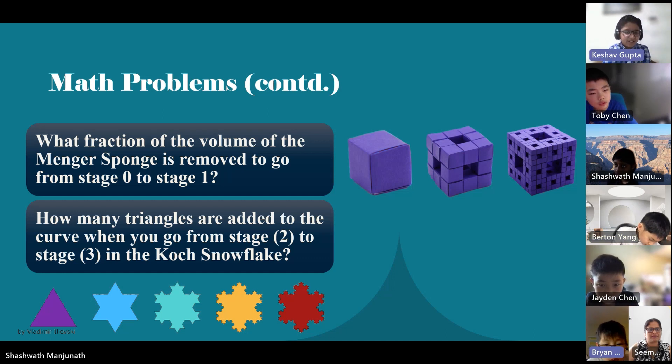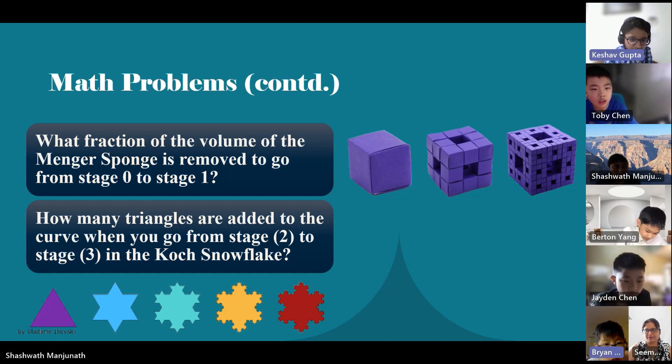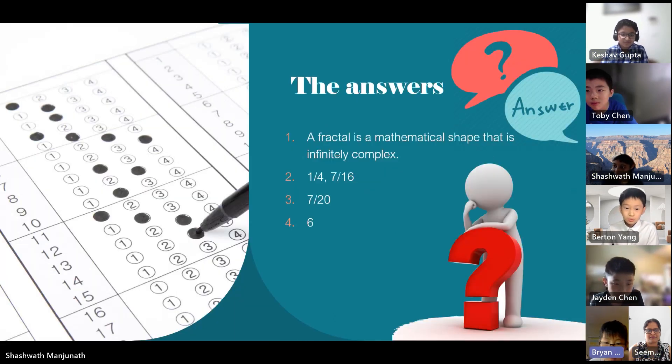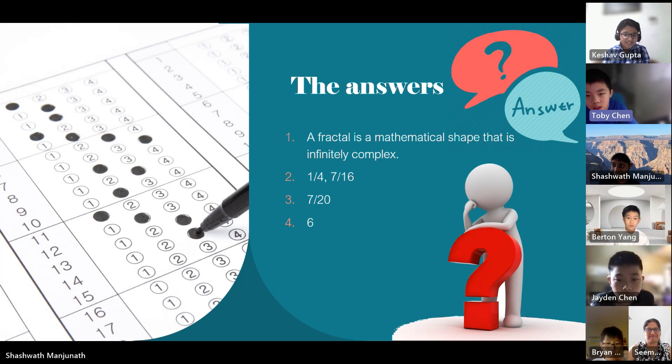So when you see how many triangles there are, so from stage two, so I think it's like two triangles per point. So it's like, what is the answer? So six. Okay, Jaden, how about we take it?